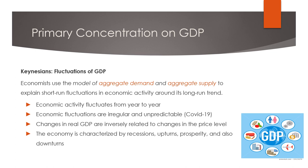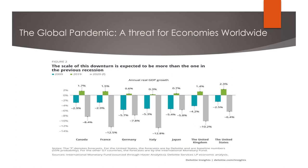Is the global pandemic a threat for economies worldwide? Here in this slide are the G7 countries' economies. We can see 2009 in blue, 2019 in green, and 2020 in gray. As a result of COVID-19, all the numbers in 2020 are negative. This means COVID-19 has had a big impact on economies worldwide, and government action is needed to put economies back on track.